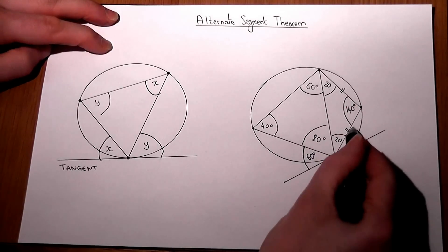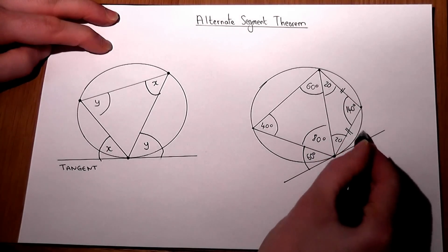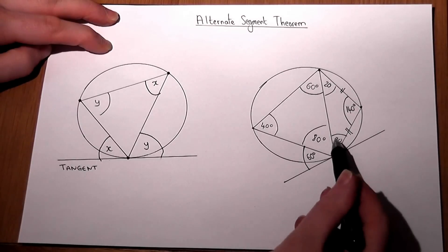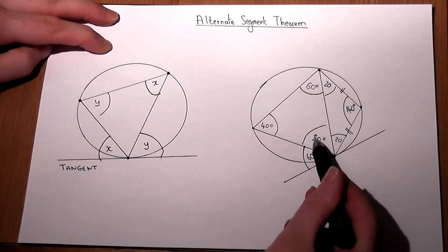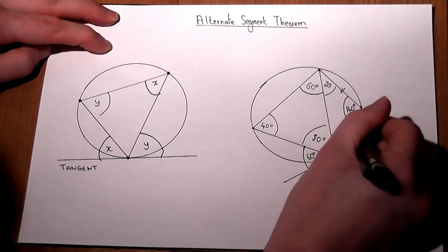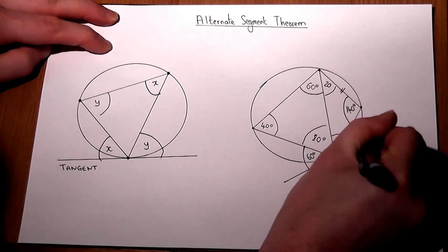And then this angle down here can be found in various ways. But probably the simplest, 20 plus 80 is 100, plus 60 is 160. That therefore must also be 20.